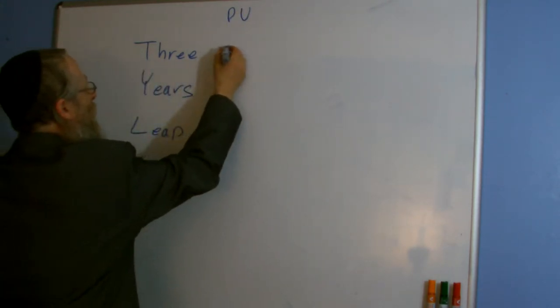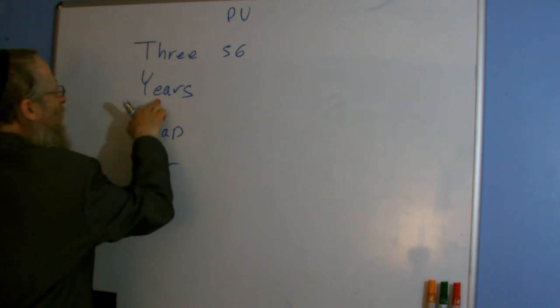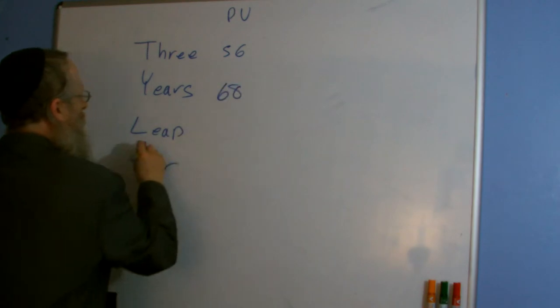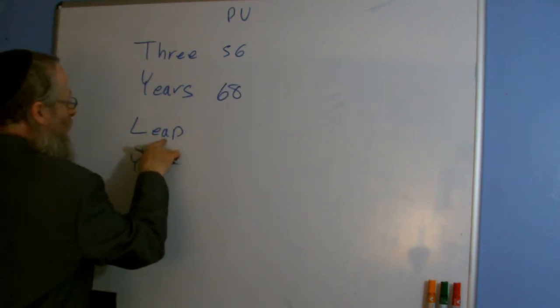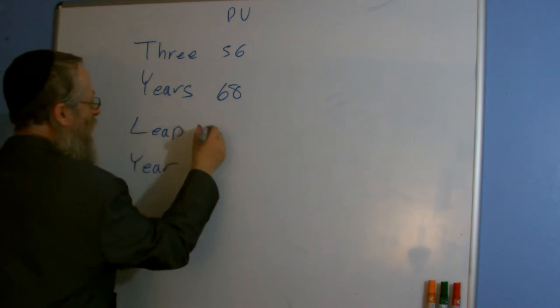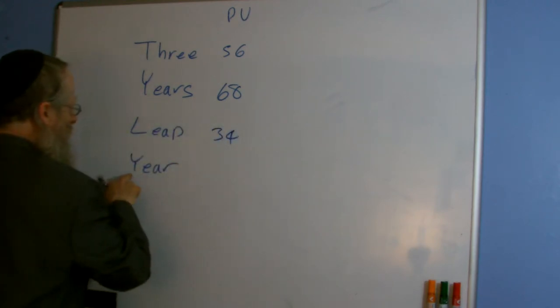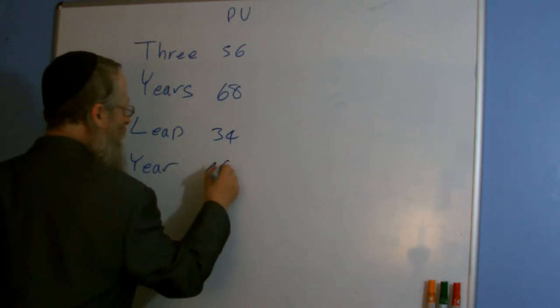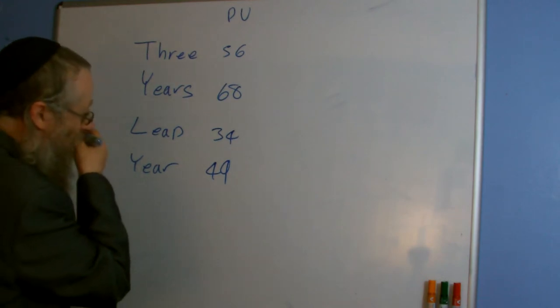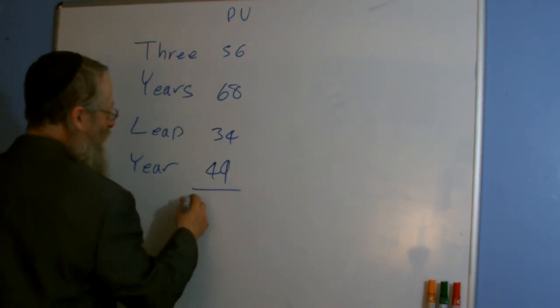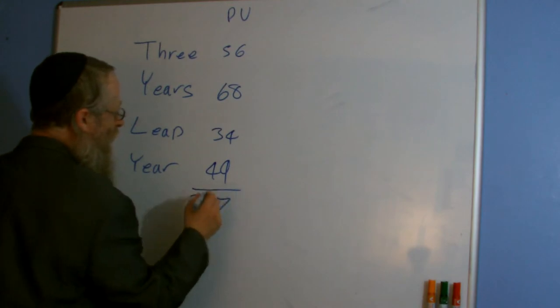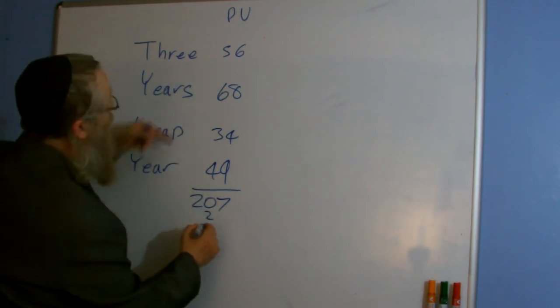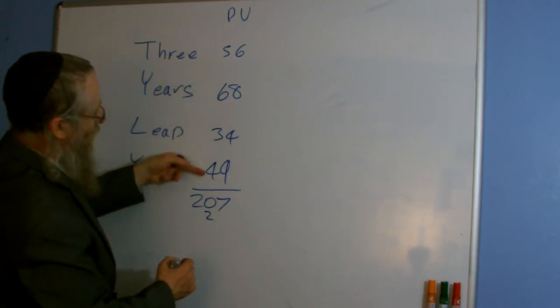Three is 56. Years 25, 30, 48, 49, 59, 68. Leap is L is 12 plus 6 is 18, 28, 34. And year is 49 I think it was. So we add that together. You should find we get 207, right? That's 10, 19, 27, carry 2, 11 plus 7 is 18, 19, 20, 207.